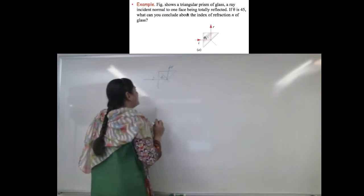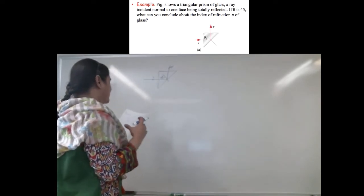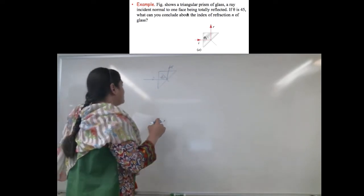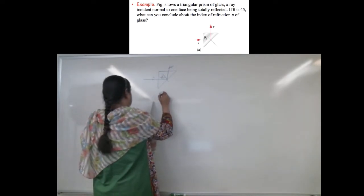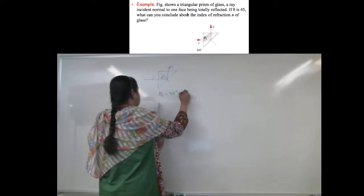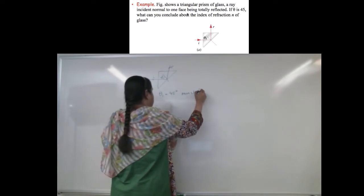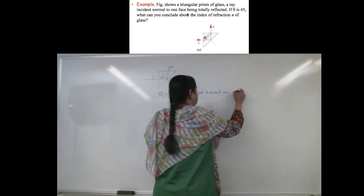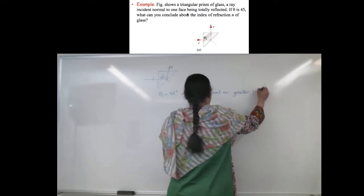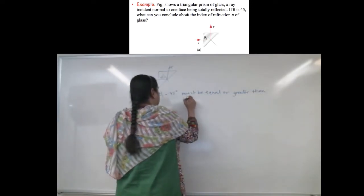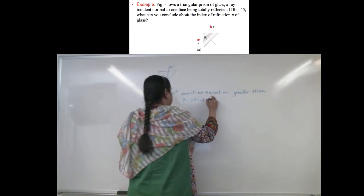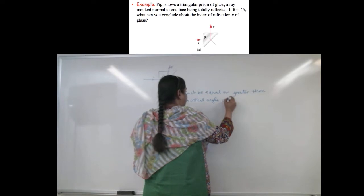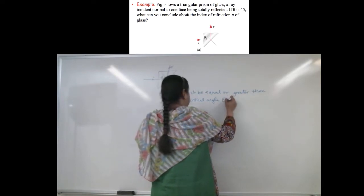That's what it gives us. And it says, what can you conclude about the index of refraction of the glass? We know that theta 1, which is 45 degrees, must be equal or greater than the critical angle, which is given by theta c for now.